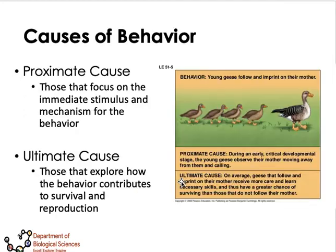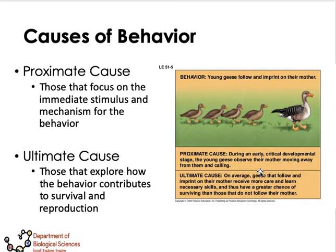In behavioral ecology, two causes of behavior have been established. The first is the proximate cause, which focuses on the immediate stimulus and mechanisms of behavior, related to heredity, development, structural, cognitive, psychological, and psychosocial aspects. For example, young geese follow an imprinting on their mother — during an early and critical developmental stage, young geese observe their mother moving away and calling them.